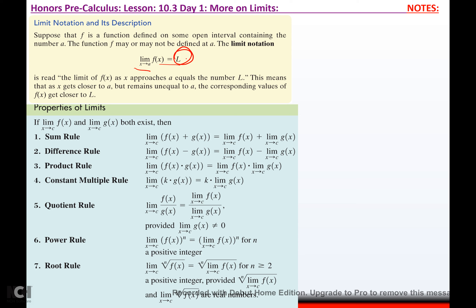Your properties of limits: if the limit as x approaches c of f(x) and the limit as x approaches c of g(x) both exist, then you have the sum rule — the limit of a sum equals the sum of the limits. Same with subtraction, multiplication, scalar multiplication, and division, provided the denominator limit isn't zero. The power rule lets you pull the power outside. The root rule applies when taking the root of a function, for n ≥ 2 a positive integer, provided the values are real numbers.